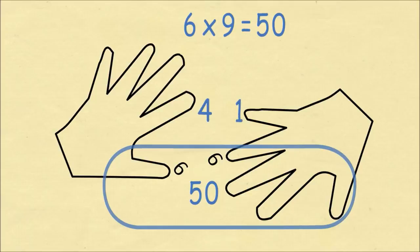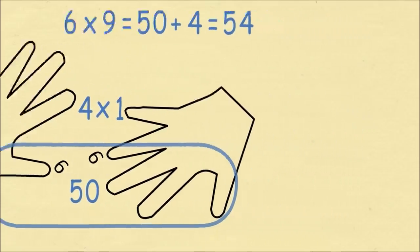Now we have four fingers above the fingers that are touching and one finger on the right hand. We multiply these and we have four. We add those two numbers, 50 and 4, to get our answer of 54.